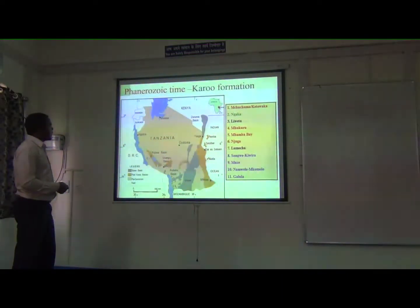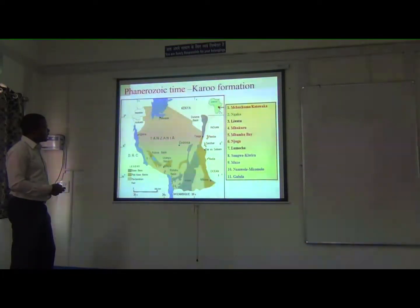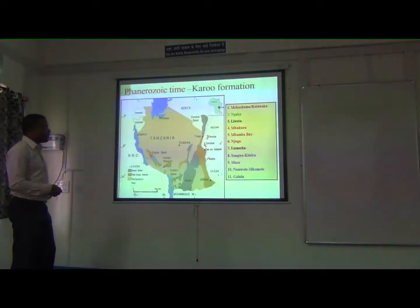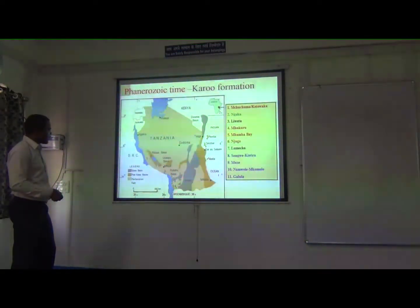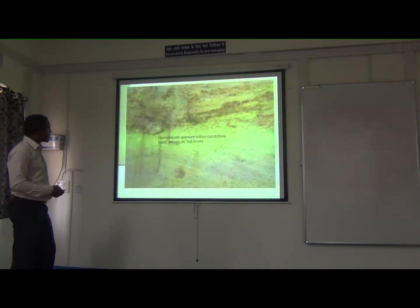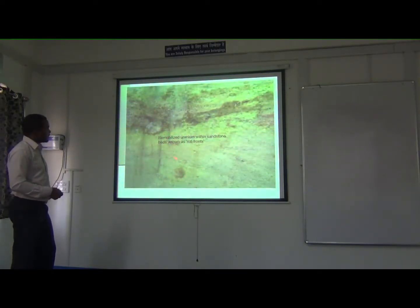In the Paleozoic time, we have the Karoo rifting, and due to this rifting we form the Karoo formations — mostly basins. These Karoo basins are very rich with coal mineralization. We have coal in this area and also within the Nyasa corridor. You can see these coal seams found within the area. Within the Karoo, we also have uranium mineralization. You can see the uranium is formed within the sandstone through a process called roll-front process.